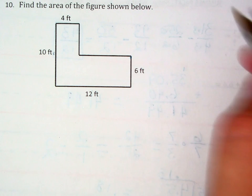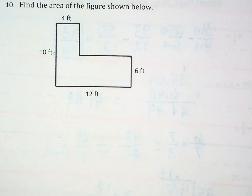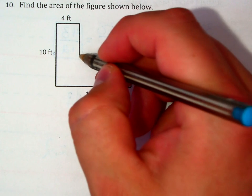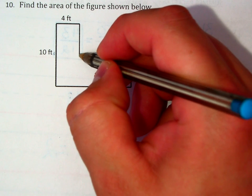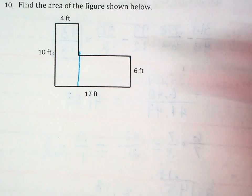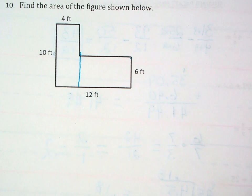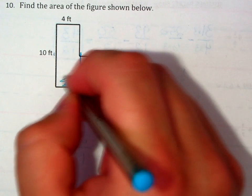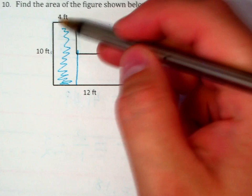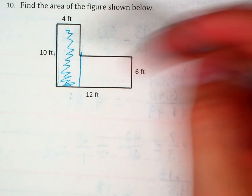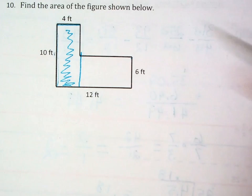Fortunately for us, this image is pretty easy for us to chunk into simple rectangular shapes. So if I draw a vertical line straight down from there, then I will realize that this piece on the left has a length of 10 and a width of 4.